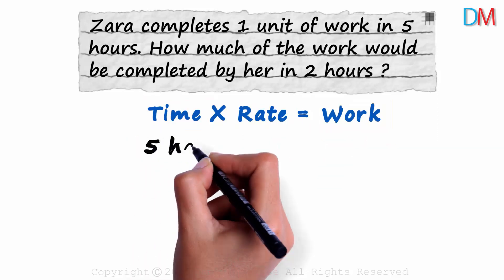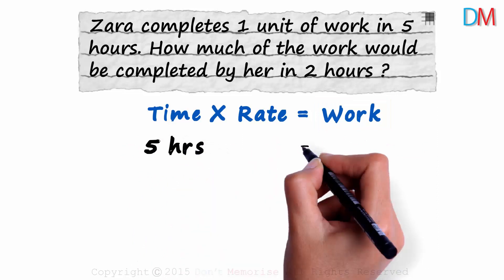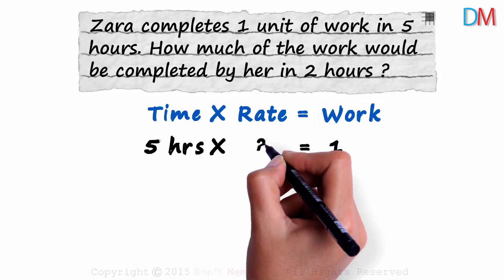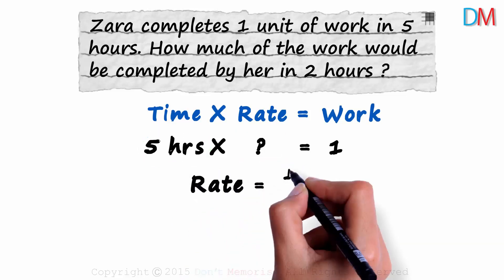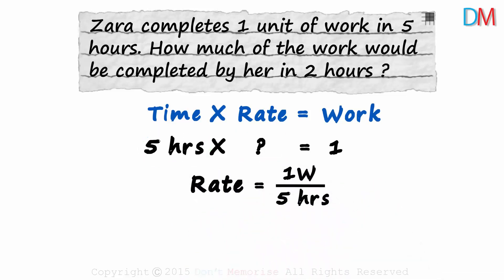Zara works for five hours and in that time frame, she completes one unit of work. What will be the rate at which she completes her work? To find the rate, we simply transpose five hours to the other side. We get the rate as one unit of work every five hours. This is the rate at which Zara completes the work.